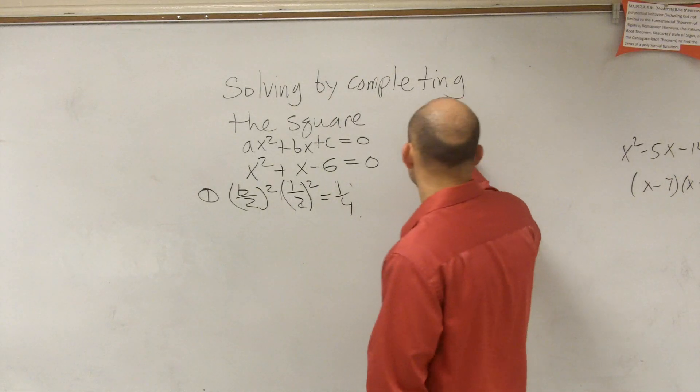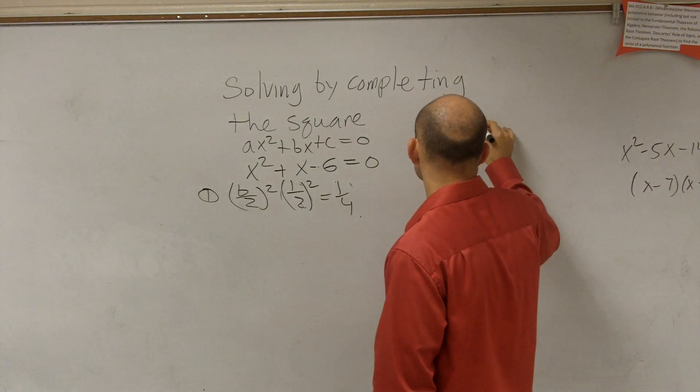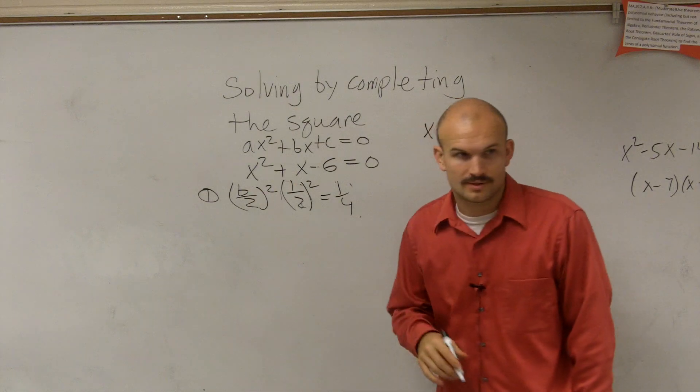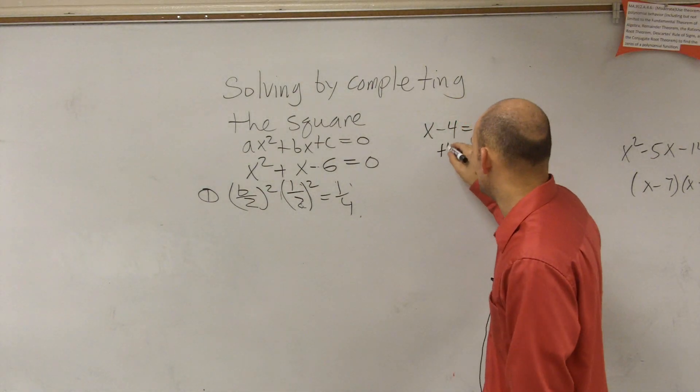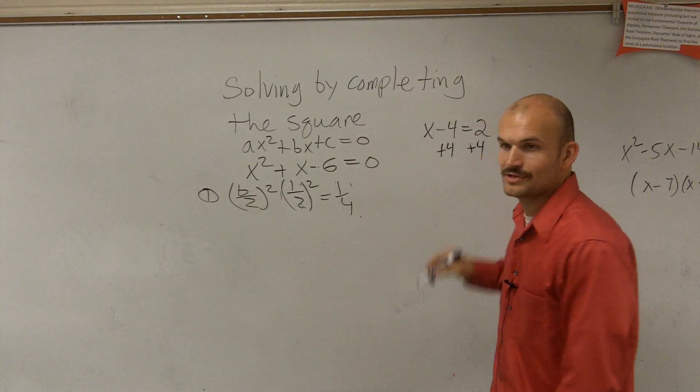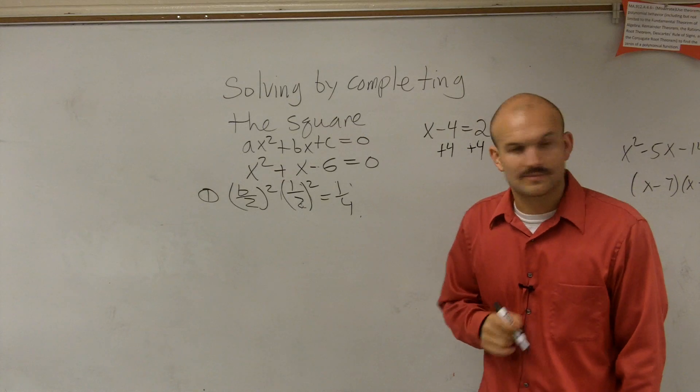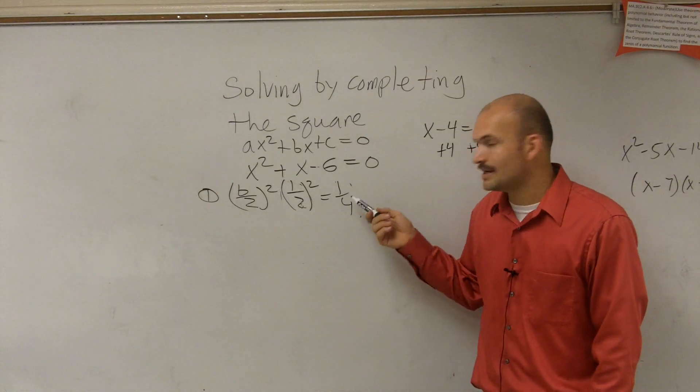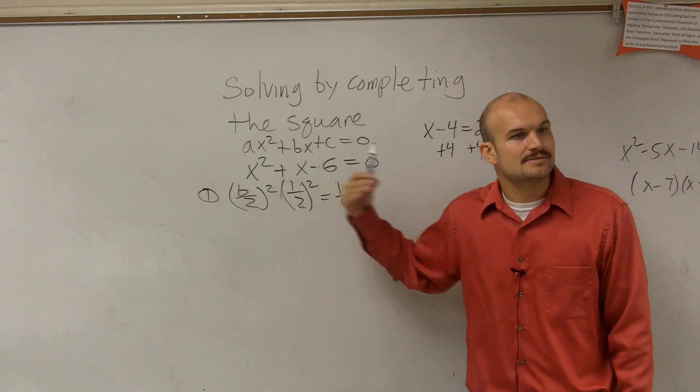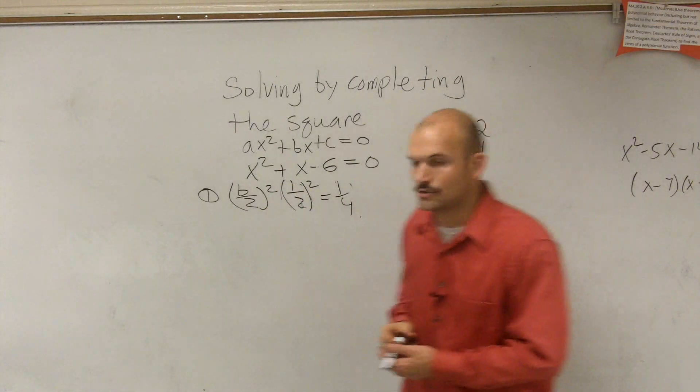Then what we're going to do is you're going to add and subtract 1 fourth. So if you guys remember this, let's look at a statement: x plus 4 equals 2. If you're going to do something to one side of the equation, you have to do it to the other side of the equation. So what I'm going to do, ladies and gentlemen, I'm going to take this 1 fourth, and I'm going to add it and subtract it on opposite ends of the equation.